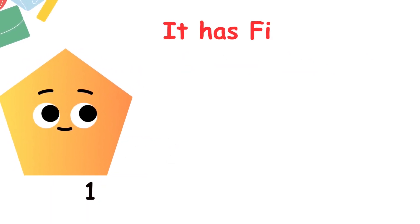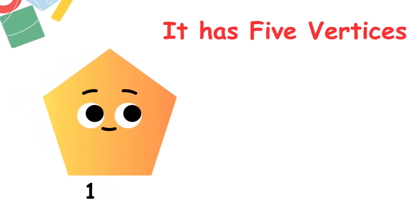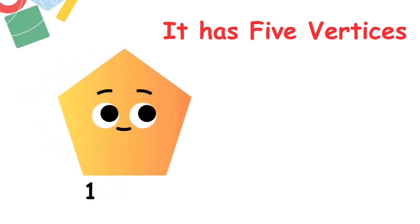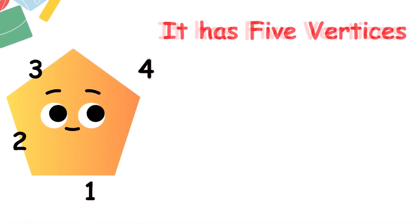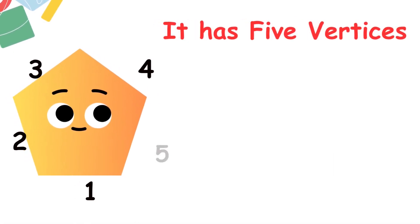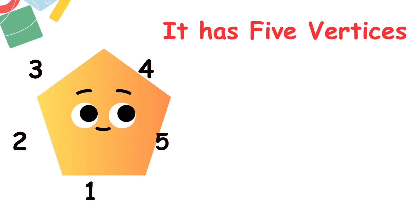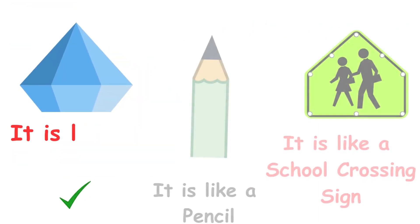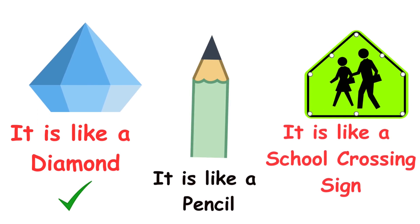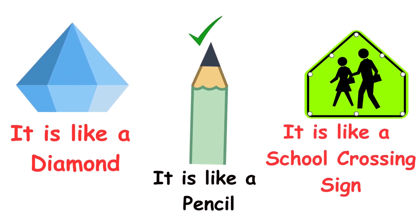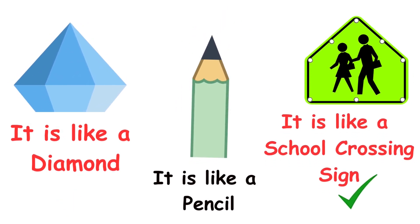This is the pentagon. It has five sides — one, two, three, four, five — and five vertices — one, two, three, four, five. Its shape is similar to a diamond, a pencil tip, and a school crossing sign.